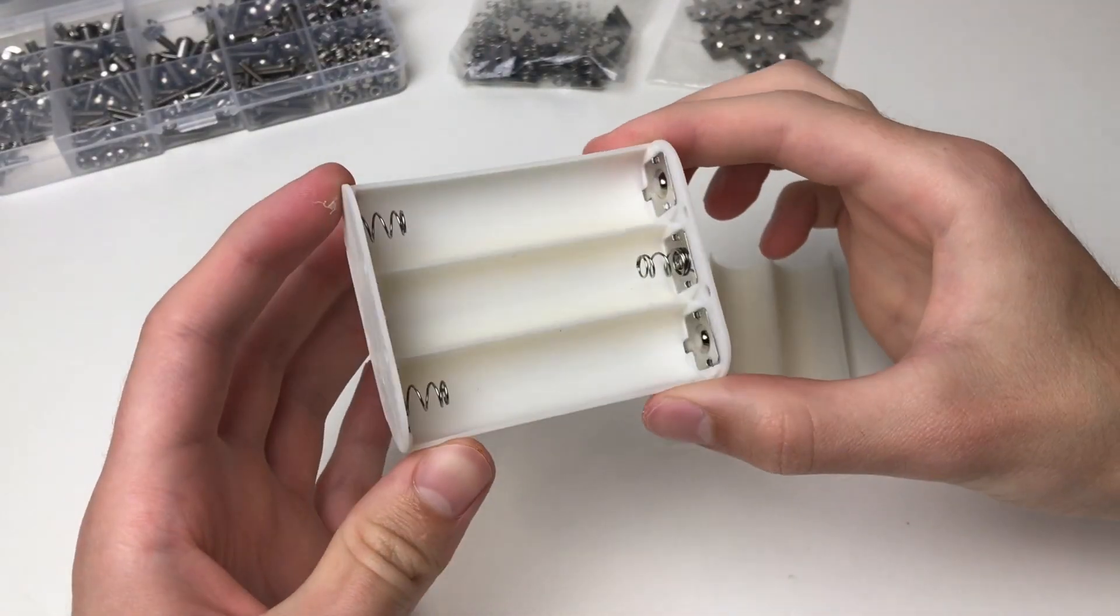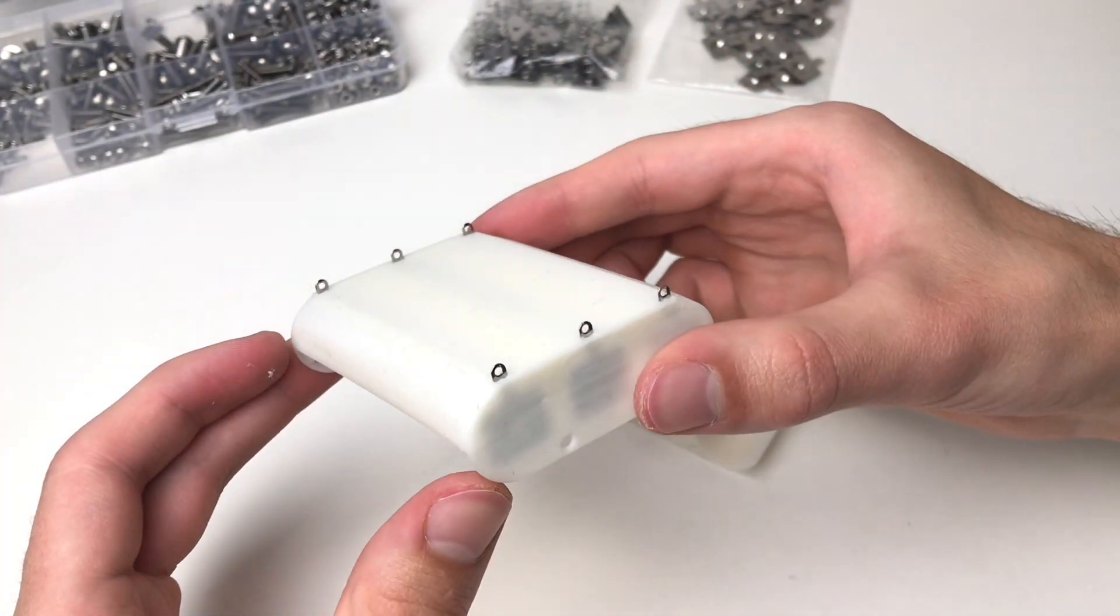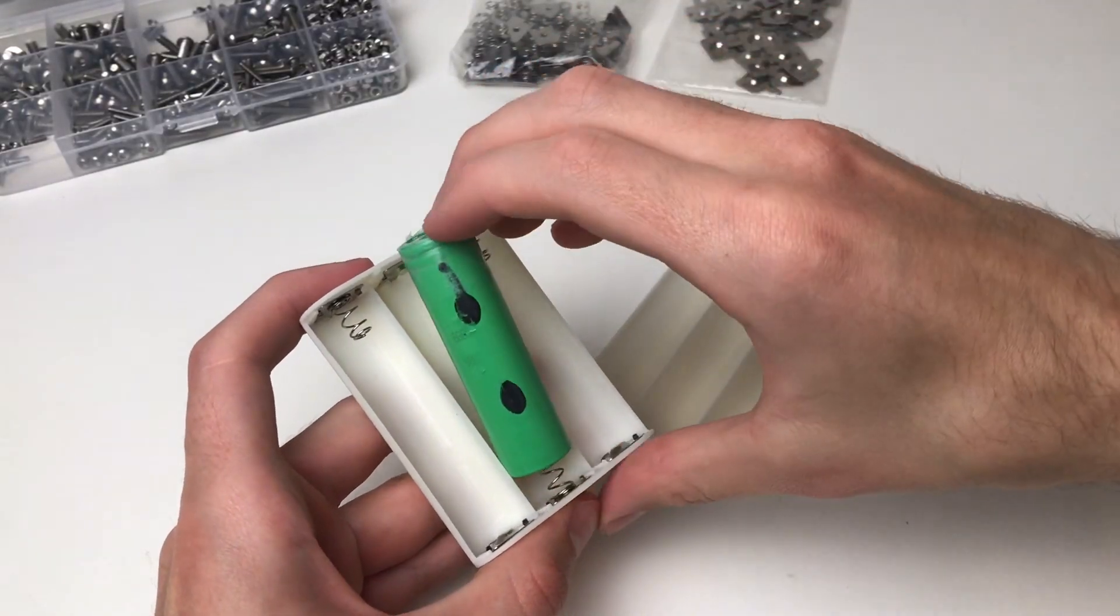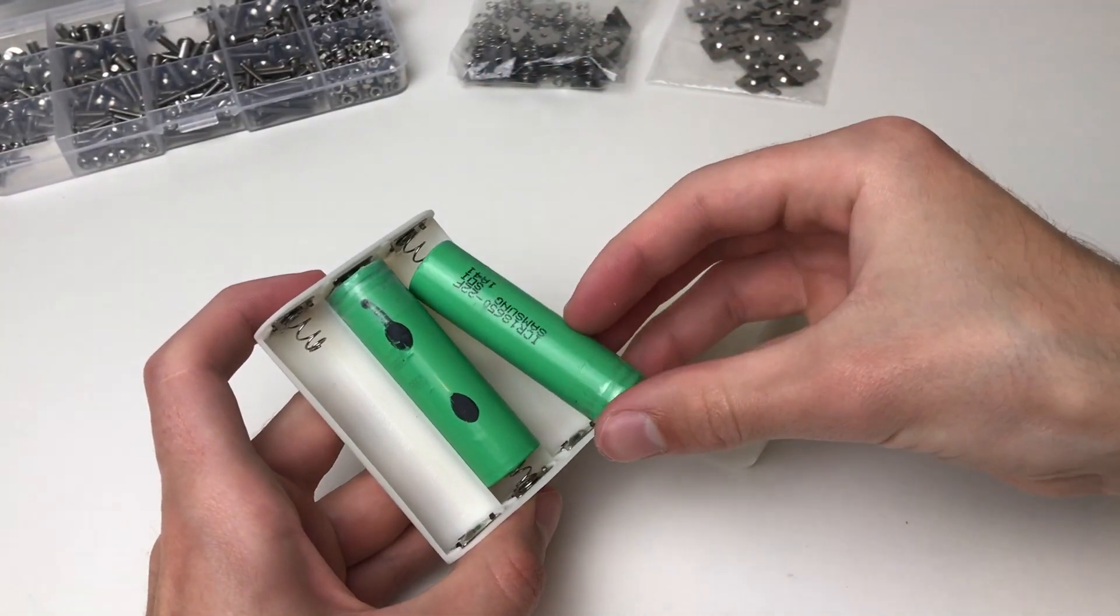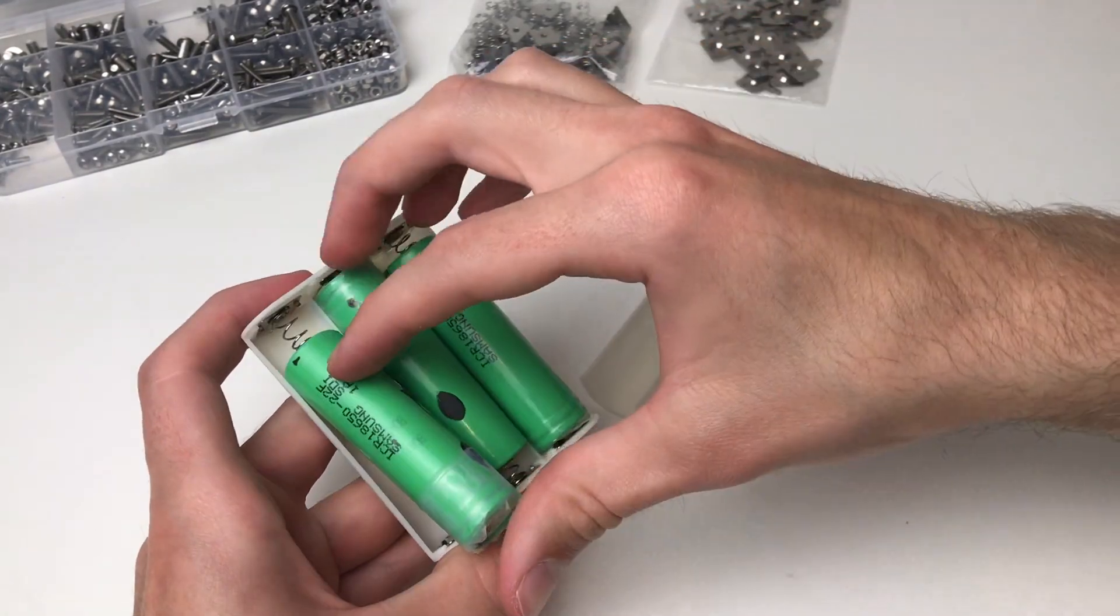I glued in the spring contacts and just put the batteries in to have a little bit of pressure on them while drying. The spring contact is on the minus side of the 18650 battery.